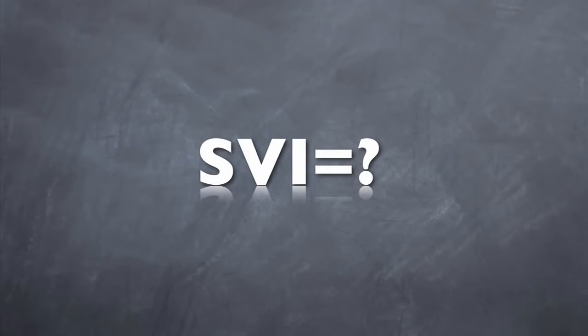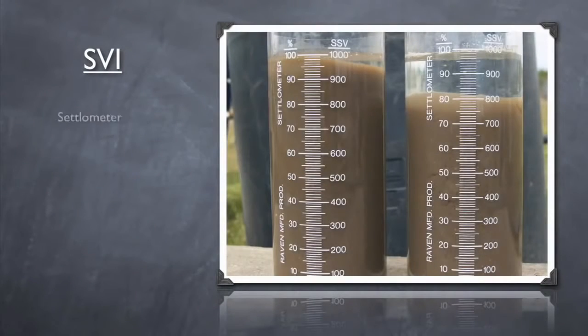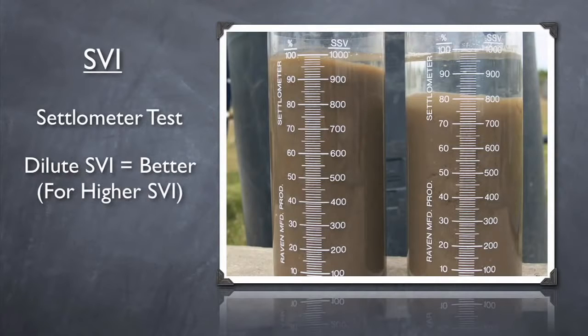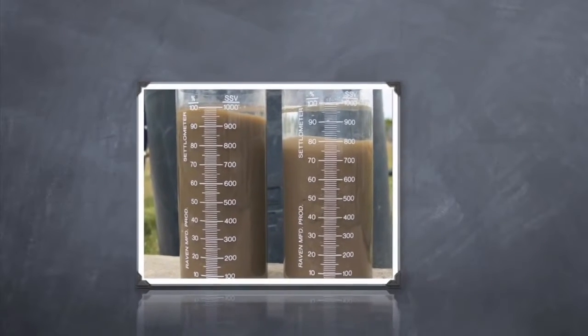Well, the SVI can be determined by performing an acetylometer test. Also, if you can, use a diluted sample to determine your SVI. This will allow for more accurate results, especially when the SVI is higher.